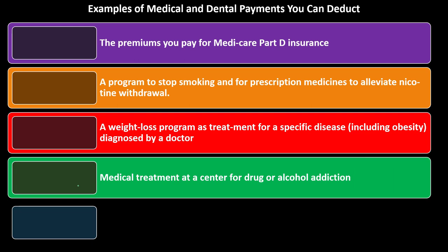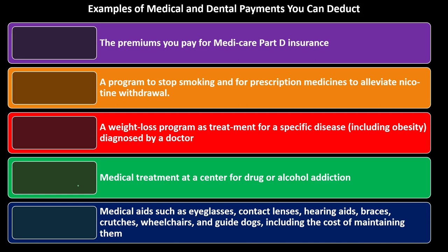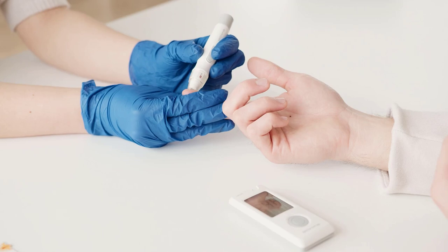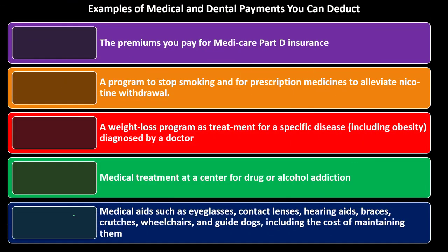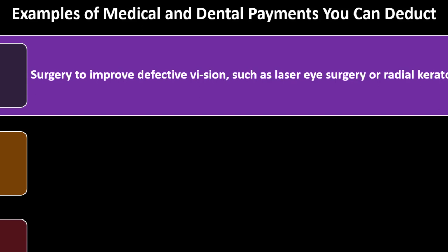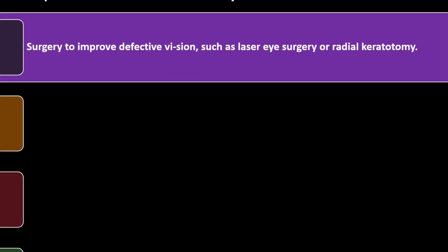Medical treatment at a center for drug or alcohol addiction is deductible. Medical aids such as eyeglasses, contact lenses, hearing aids, braces, crutches, wheelchairs, and guide dogs — including the cost of maintaining them — are deductible. Medical aids can also be a gray area, since a doctor might recommend a particular aid that raises questions about whether it is completely medical in nature — and some of these can get quite expensive. Examples of deductible medical and dental payments also include surgery to improve defective vision, such as laser eye surgery or radial keratotomy.